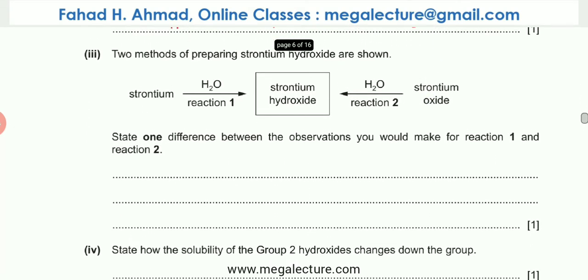The next part of the question reads that two methods of preparing strontium hydroxide are shown. Strontium hydroxide is formed from strontium oxide which is SrO by adding water to it. The other one is strontium reacting with water.